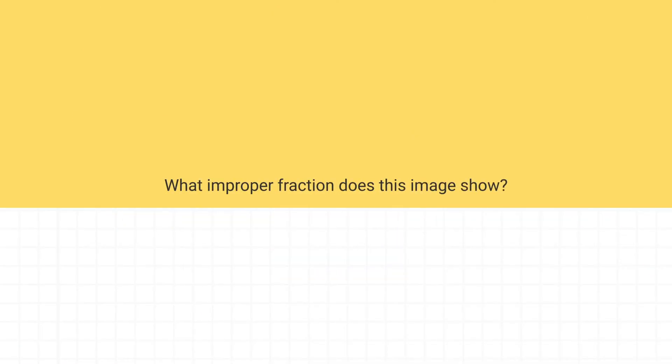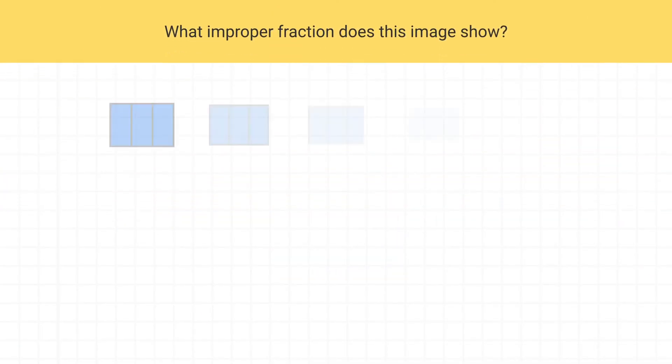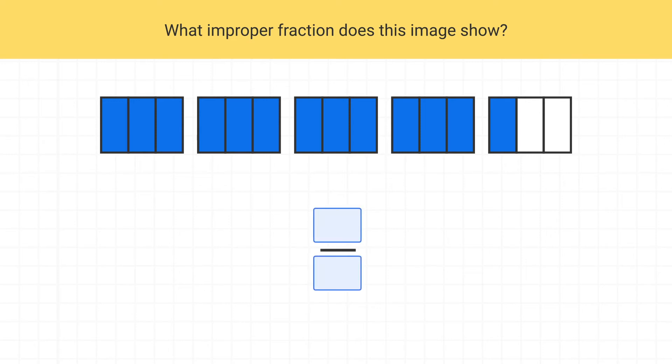Let's write an improper fraction to describe this image. Remember that in a fraction, the numerator is the number of pieces we have. How many shaded pieces are there in total? There's a total of 1, 2, 3, 4, 5, 6, 7, 8, 9, 10, 11, 12, 13 shaded pieces, so our numerator is 13.